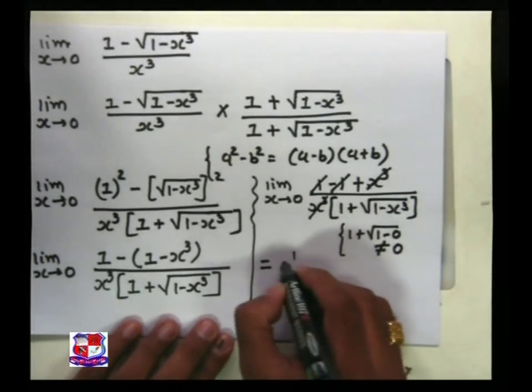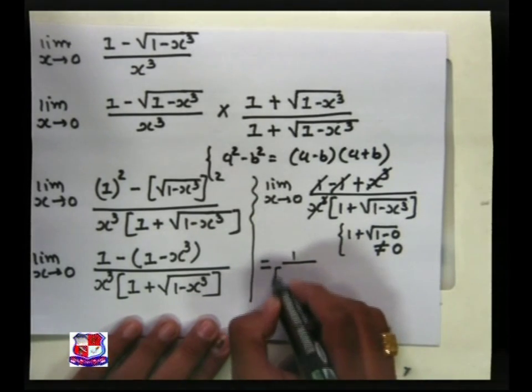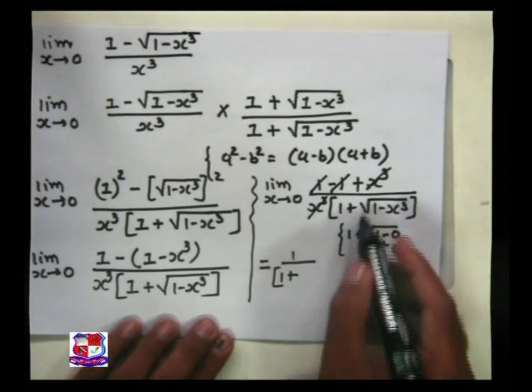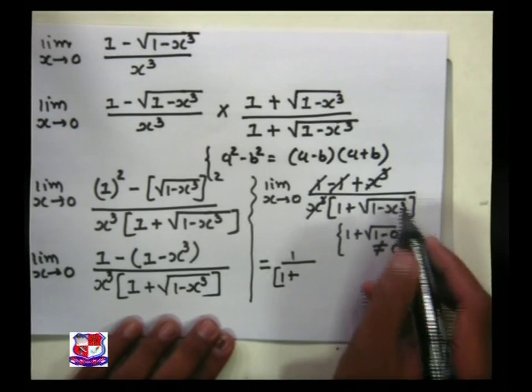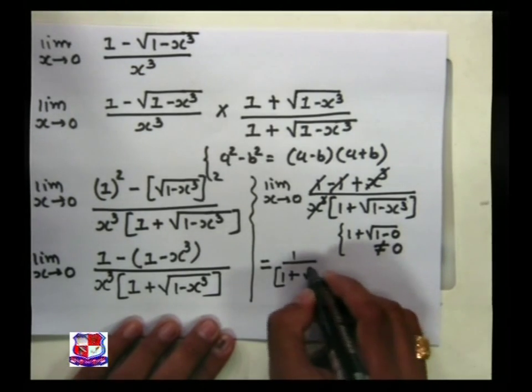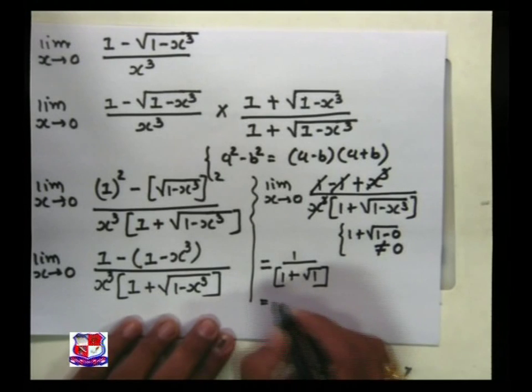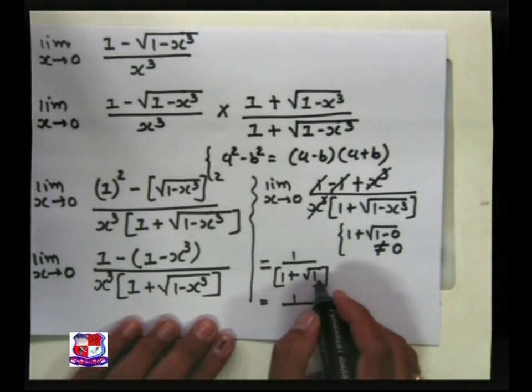So write it 1 here, 1 plus under root of 1 minus 0. This is nothing but under root of 1, so finally 1 plus under root 1. Under root 1 that is 1.